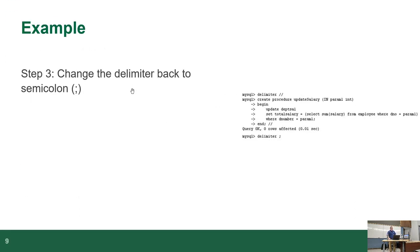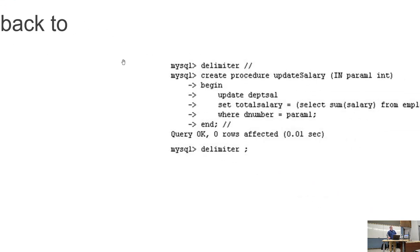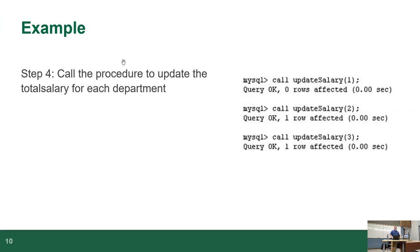Step three: put the delimiter back to a semicolon. So you change the delimiter, create your procedure, then change it back once you're done — otherwise it'll stay like that until you disconnect and reconnect. This applies to functions and triggers too — any time you're programming the database, you have to change the delimiter. Then you can CALL the procedure, give it the parameter, and it'll just execute the code.